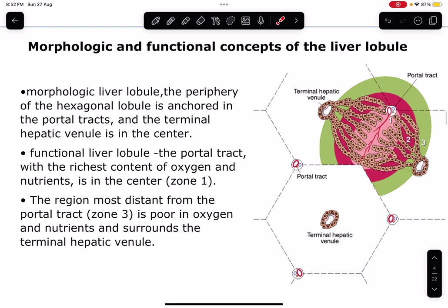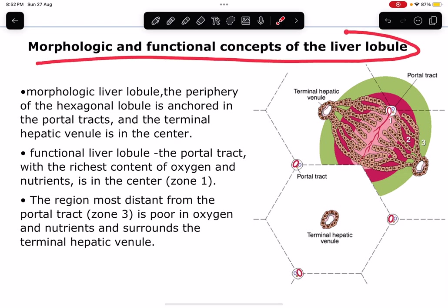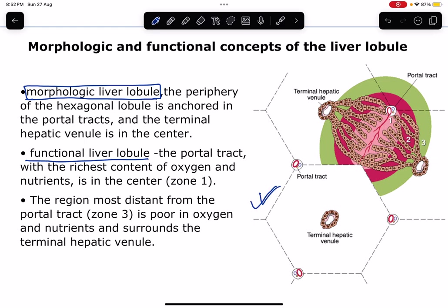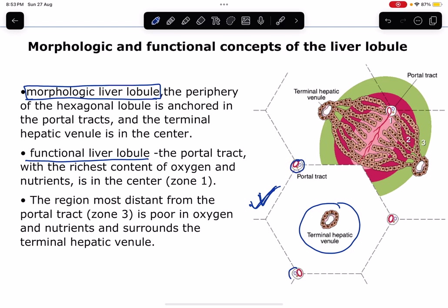Now let's look at the functional and morphological concepts of the liver lobule. This is important because once we know what a liver lobule is, we will understand the pathological aspects of alcoholic liver disease. The morphological liver lobule is a hexagonal lobule where there is a terminal hepatic venule at the center and portal tracts at the periphery.